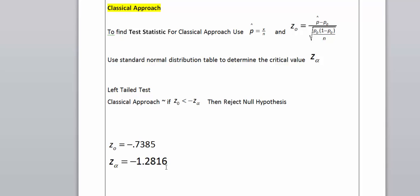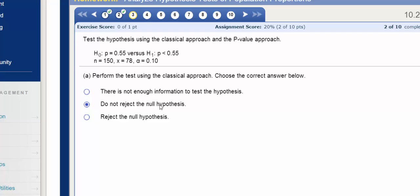Negative 1.2816. So this is an exact value. The table gives us a number that's still pretty close. I wouldn't change our outcome. We would still fail to reject the null hypothesis.